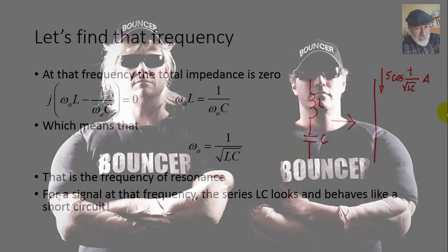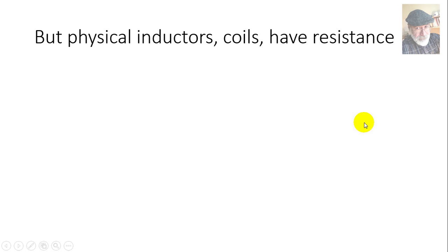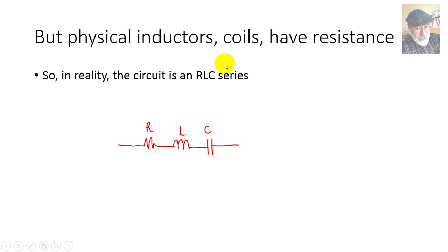They are like a couple of bouncers in the path of currents, allowing in only that one current with the right frequency 1/√(LC), and presenting opposition to any current of any other frequency. But any physical inductor — a coil — has some resistance, so what we really have is an RLC series circuit.